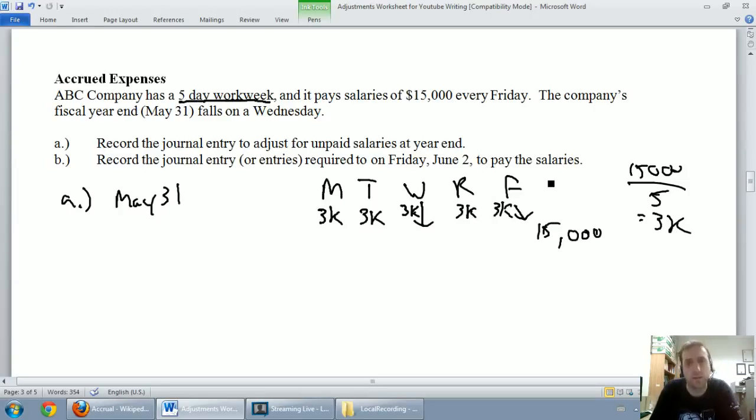So $3,000 for Monday, $3,000 for Tuesday, $3,000 for Wednesday, Thursday, and Friday. How much have they earned up to Wednesday? They've earned Monday and Tuesday for sure, and we assume our fiscal year end happens at the end of day on Wednesday, so our employees have earned $9,000 worth of salaries for which they've not been paid.